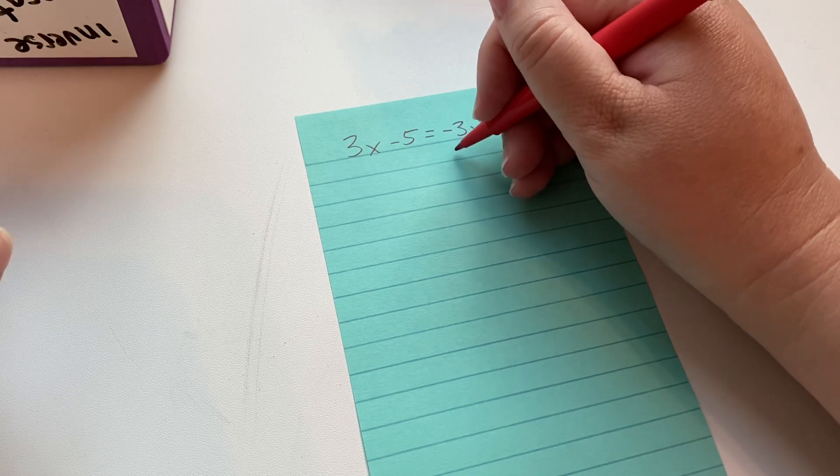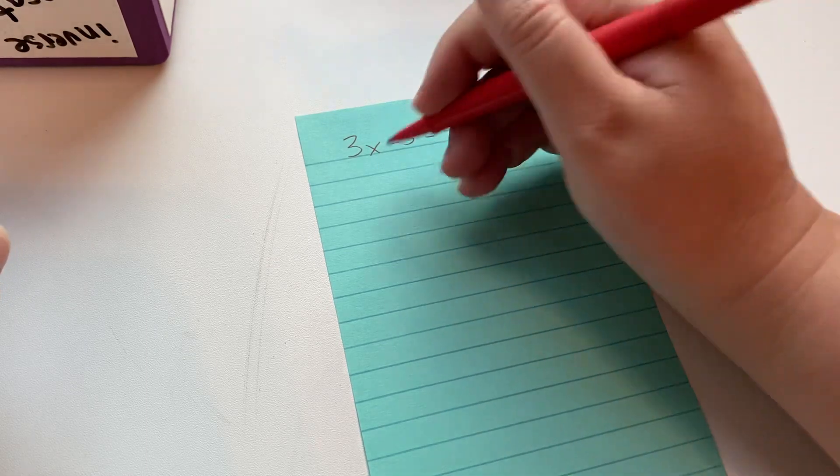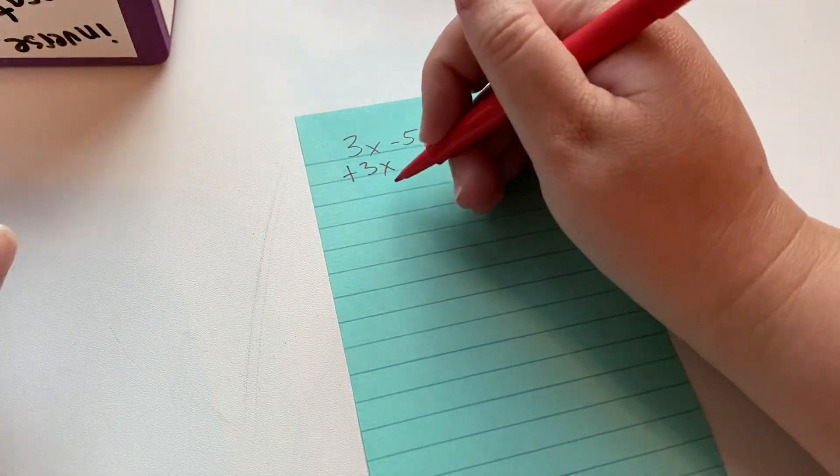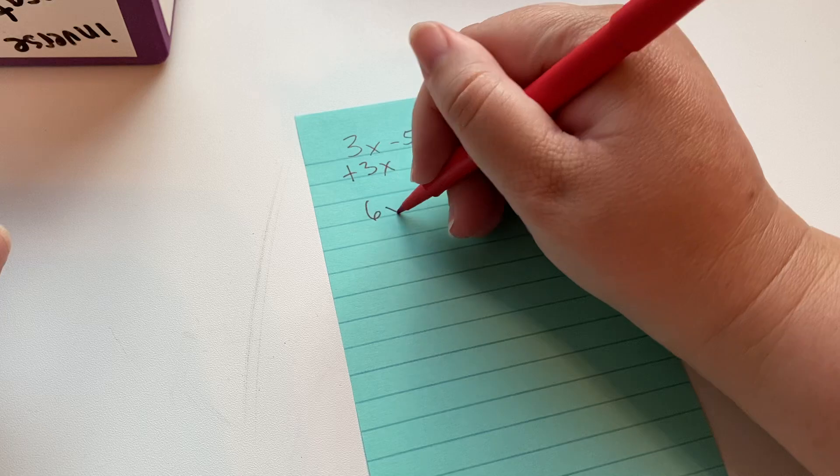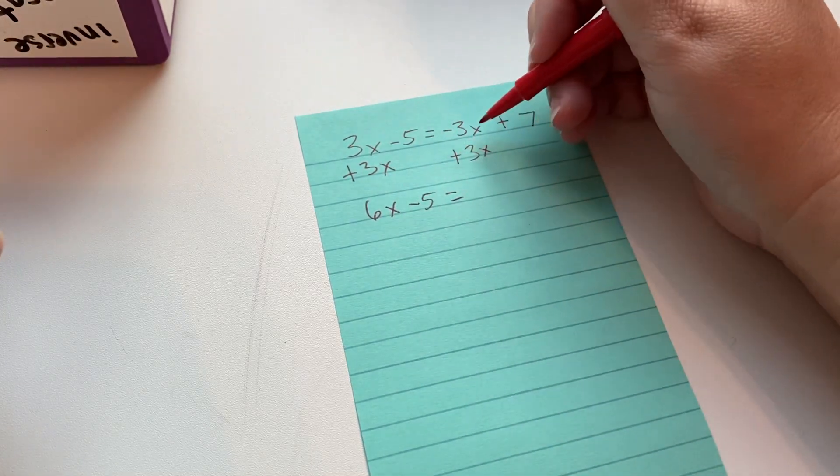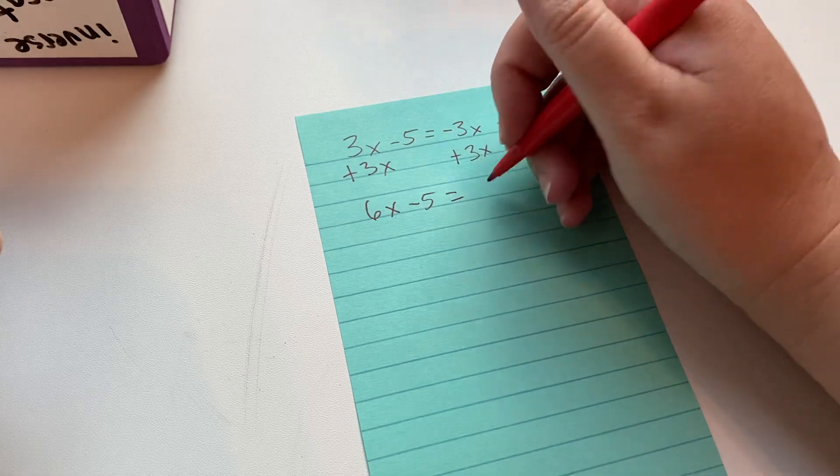So if I want to get rid of negative 3, then I add 3 to both sides. This will be 6x minus 5 because we didn't do anything to that. Negative 3 plus 3 is 0, so we're left with the 7.